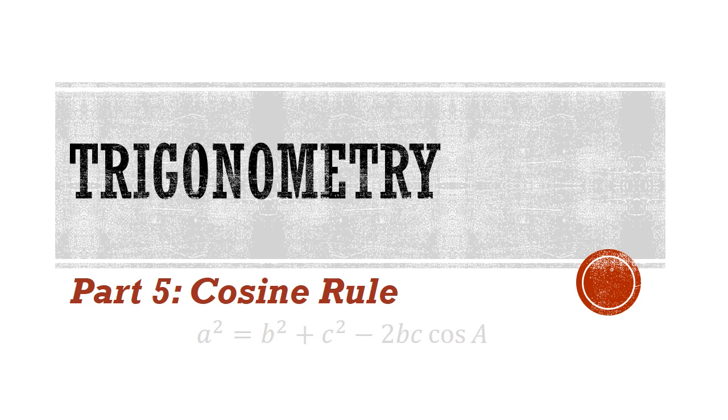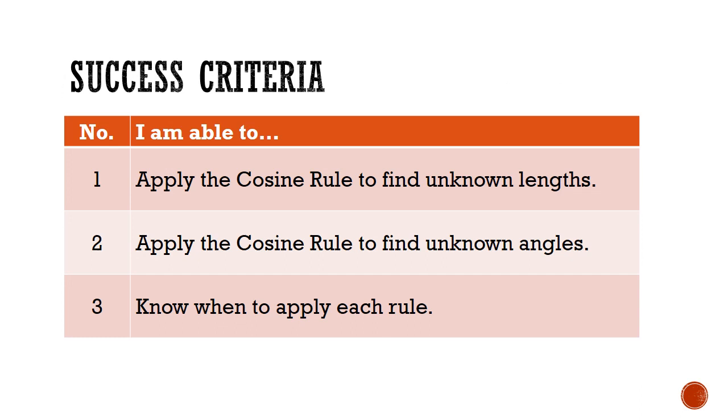Greetings and welcome to part 5 of the O-level trigonometry series. Today we'll be looking at the cosine rule. The success criteria for today will be for students to be able to apply the cosine rule to find the unknown lengths and unknown angles for given triangles, as well as to know when to apply each of the rules that we've covered thus far. I will end off this lesson with a summary of all the rules.